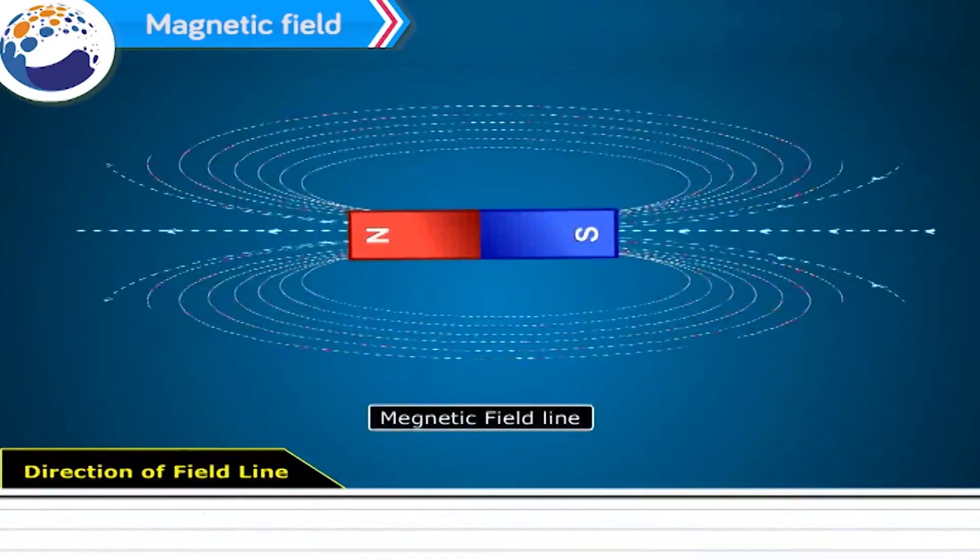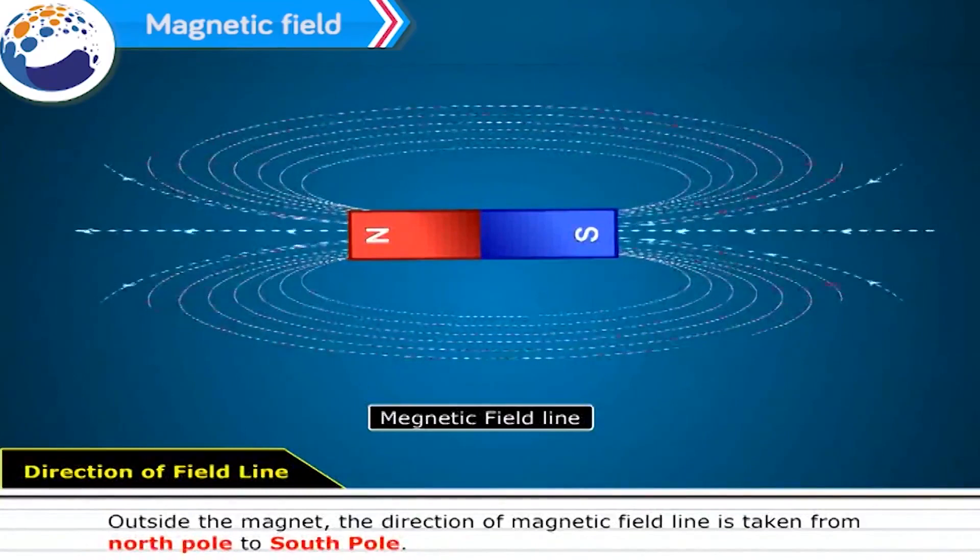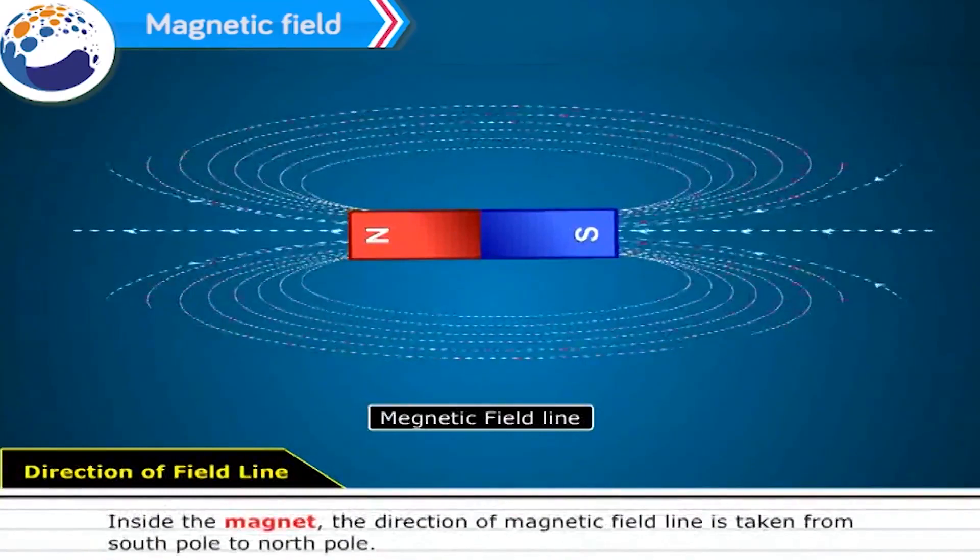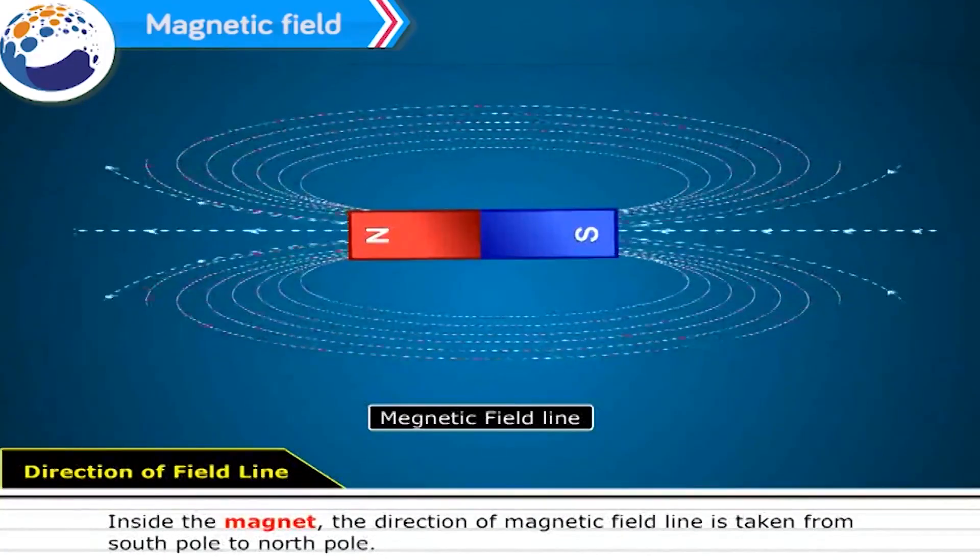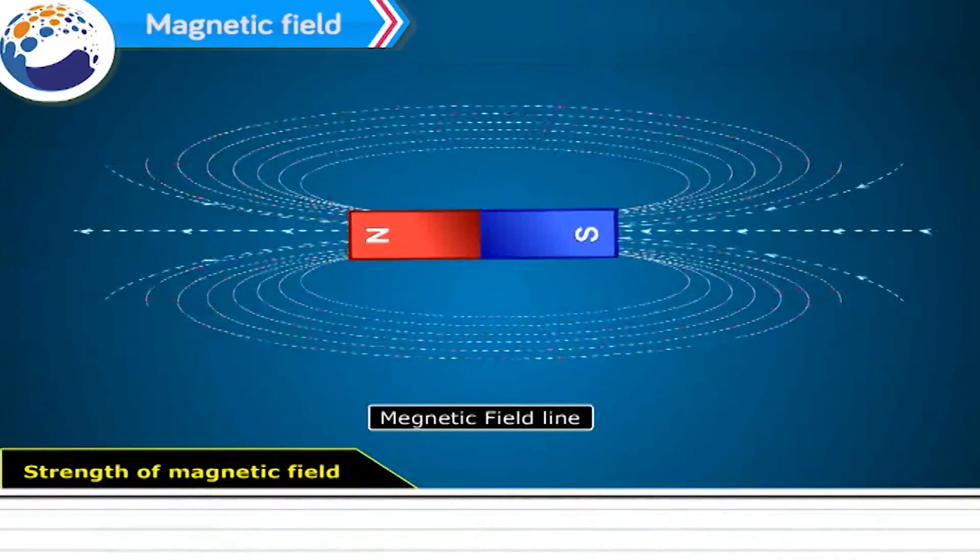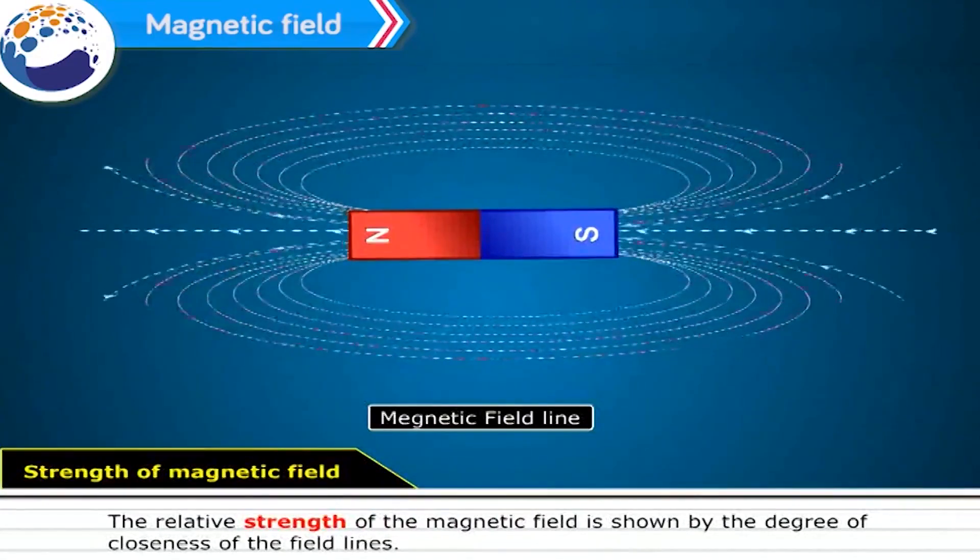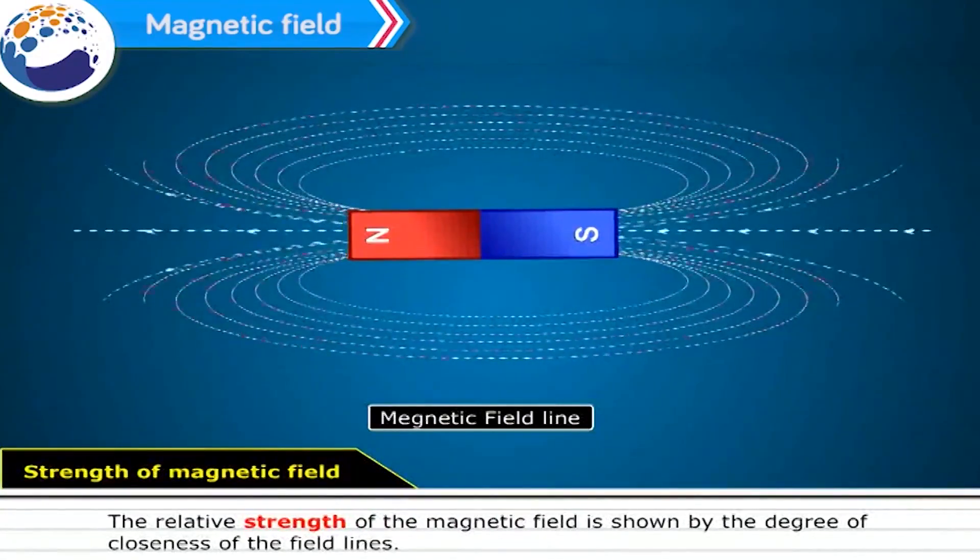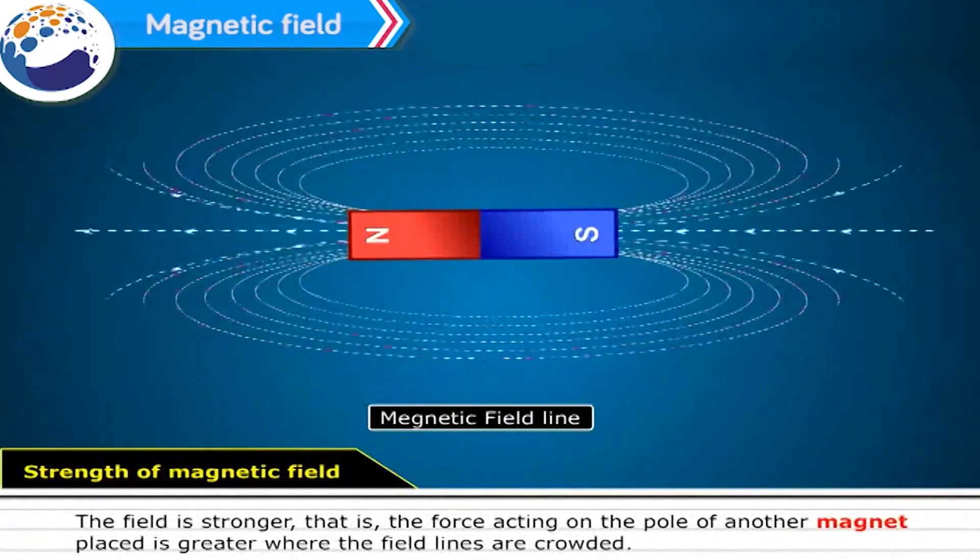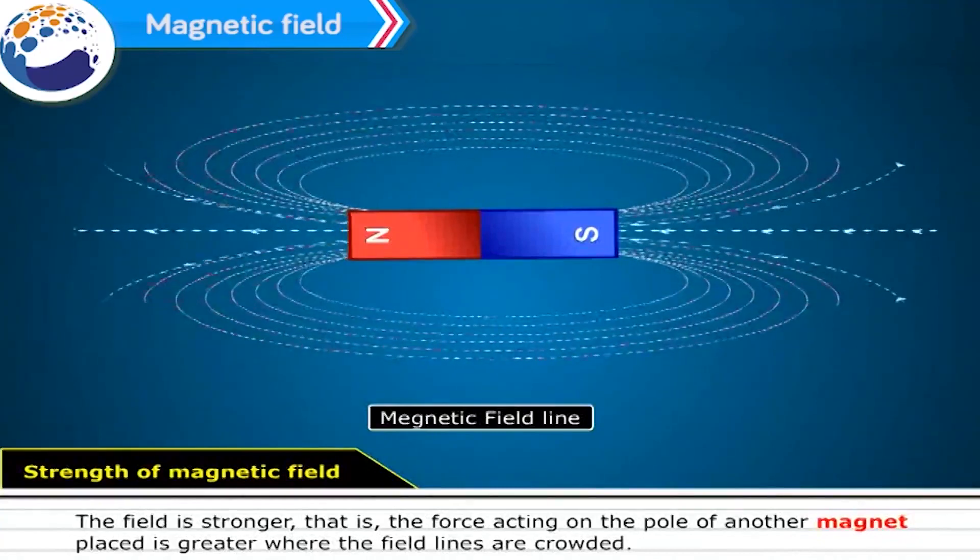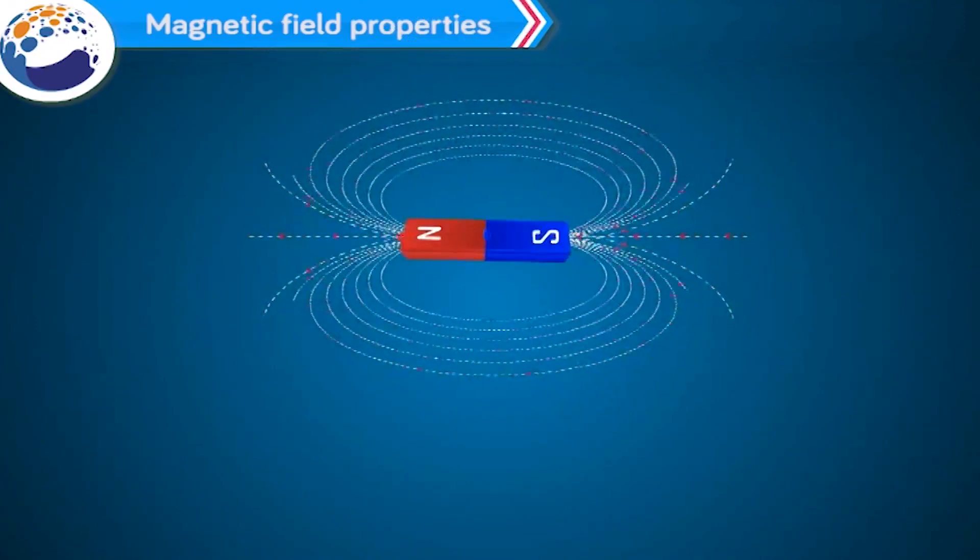Direction of field lines. Outside the magnet, the direction of magnetic field line is taken from north pole to south pole. Inside the magnet, the direction of magnetic field line is taken from south pole to north pole. Strength of magnetic field. The relative strength of the magnetic field is shown by the degree of closeness of the field lines. The field is stronger, i.e., the force acting on the pole of another magnet placed is greater where the field lines are crowded.